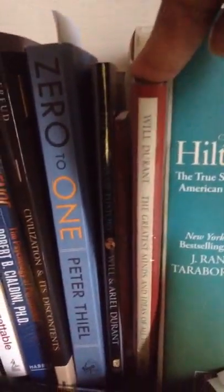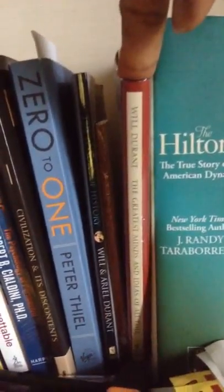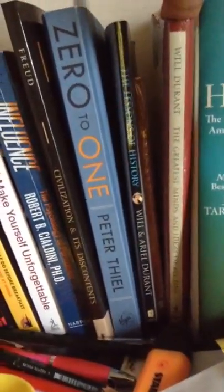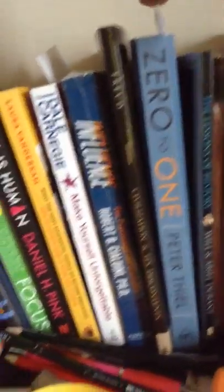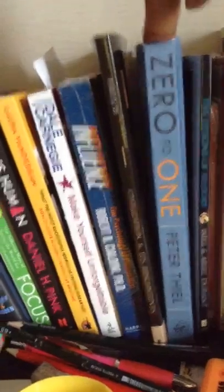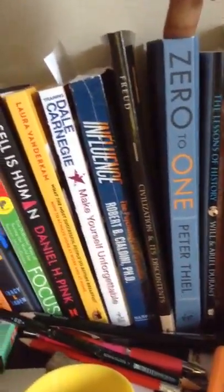This book is a classic, Will Durant. The Greatest Minds of History. Another one, Lessons of History. It's a good one actually. I'm into business. I really like this one. This is useful. Zero to One by Peter Thiel.